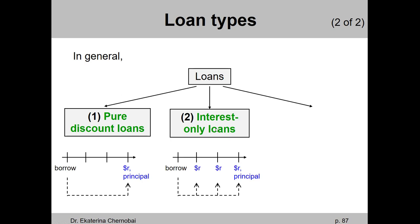The second type of loans is interest-only loans. That's when you do pay something in between. You pay the principal at the end — the entire amount that you borrow now, you pay that full amount at the very end when the loan is due. And in between, you're also paying interest. So maybe it's a three-year loan — you'll be paying an interest amount in dollars once a year, and the principal at the very end.